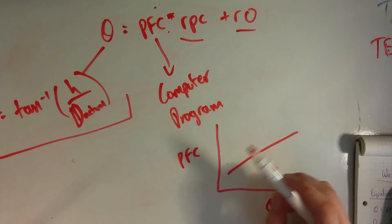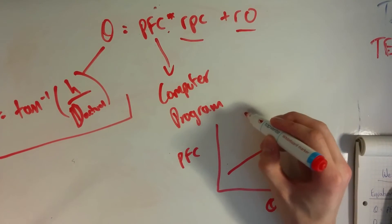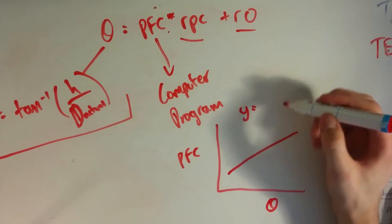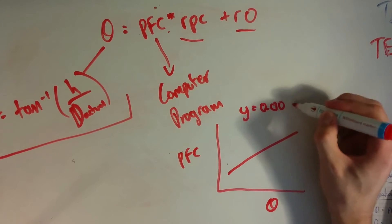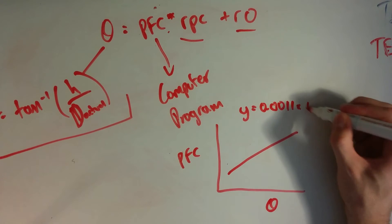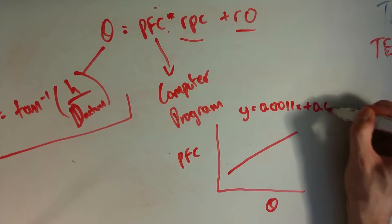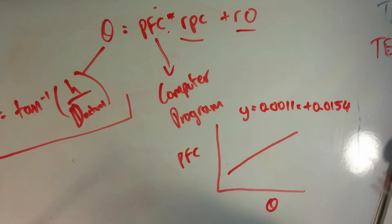And thanks to Excel we're getting this, so we're getting y equals 0.0011x plus 0.0154.